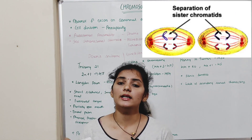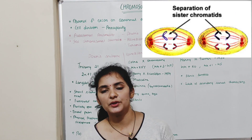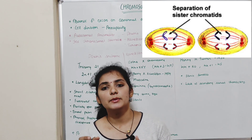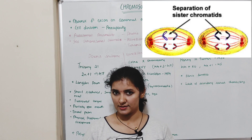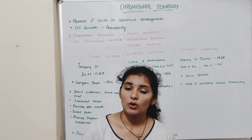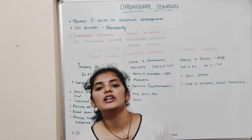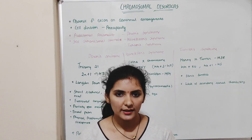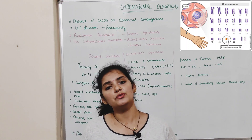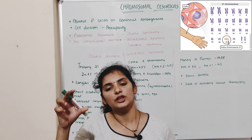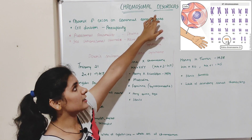Normally in cell division, the chromatids will separate or segregate and be equally distributed to the produced daughter cells. But sometimes, in rare cases, these chromatids fail to segregate normally. Because of that, there is a gain or loss of chromosome in the produced daughter cell, which results in chromosomal disorder.